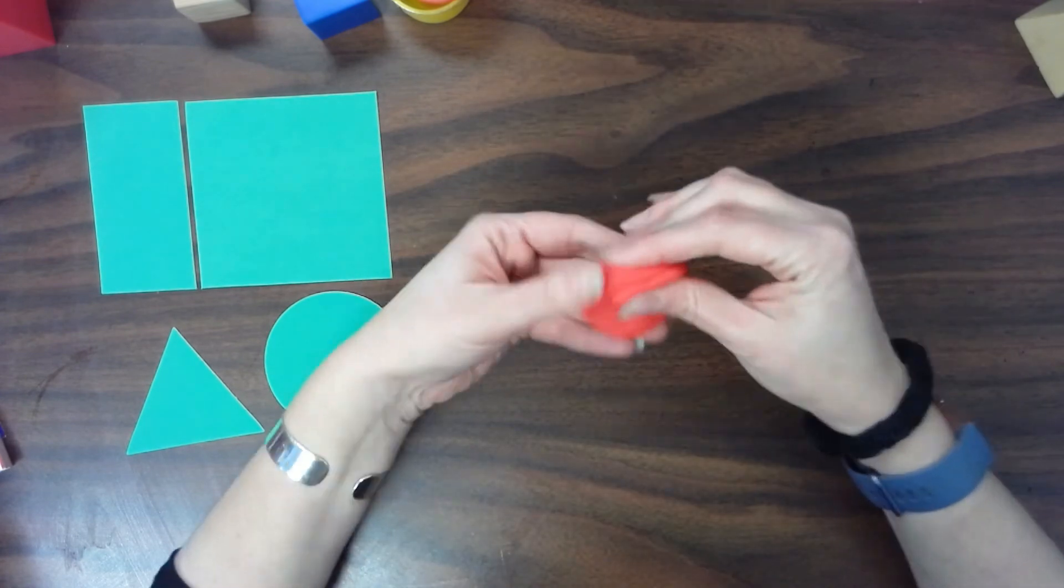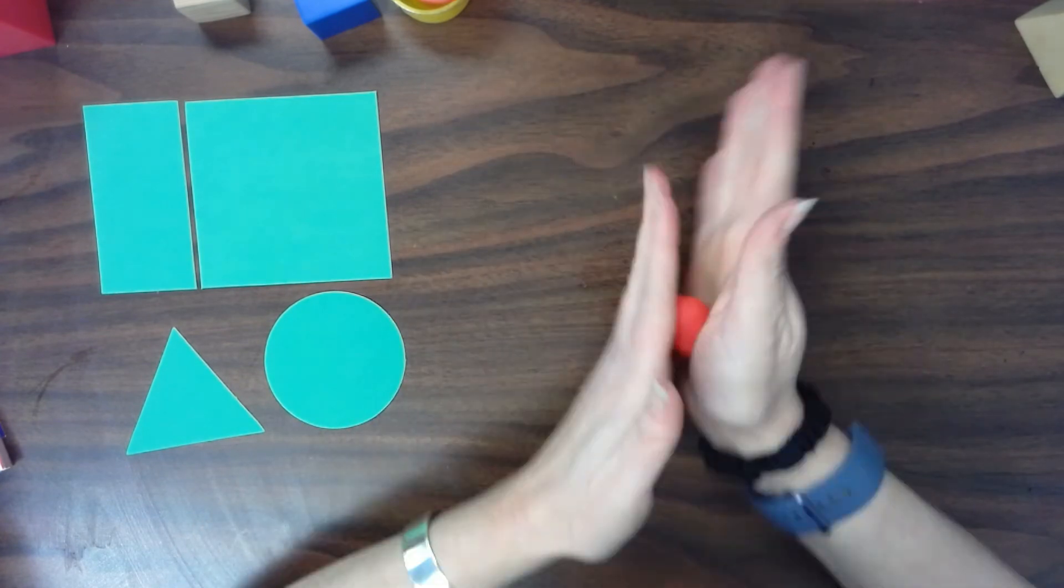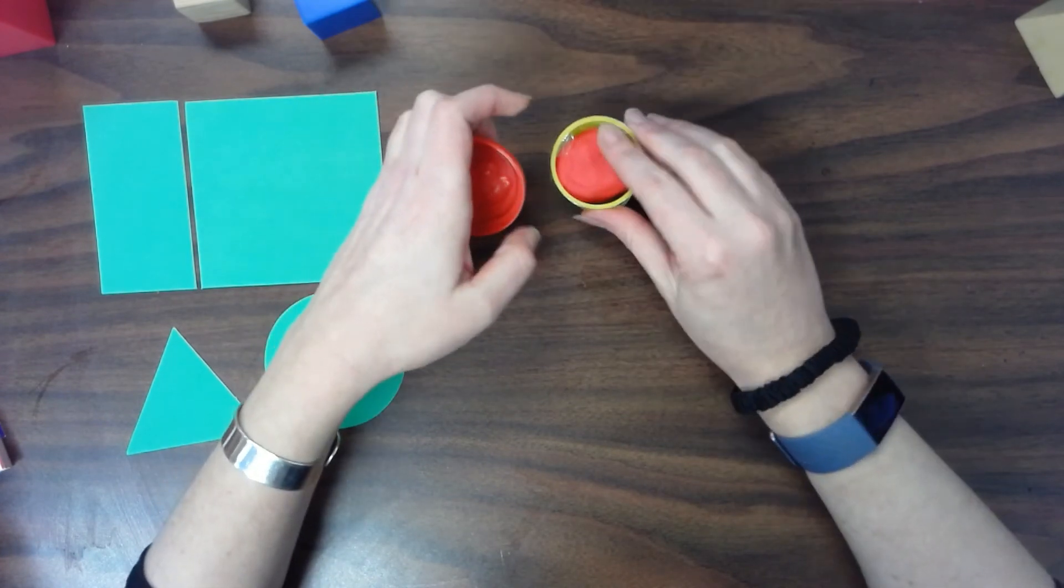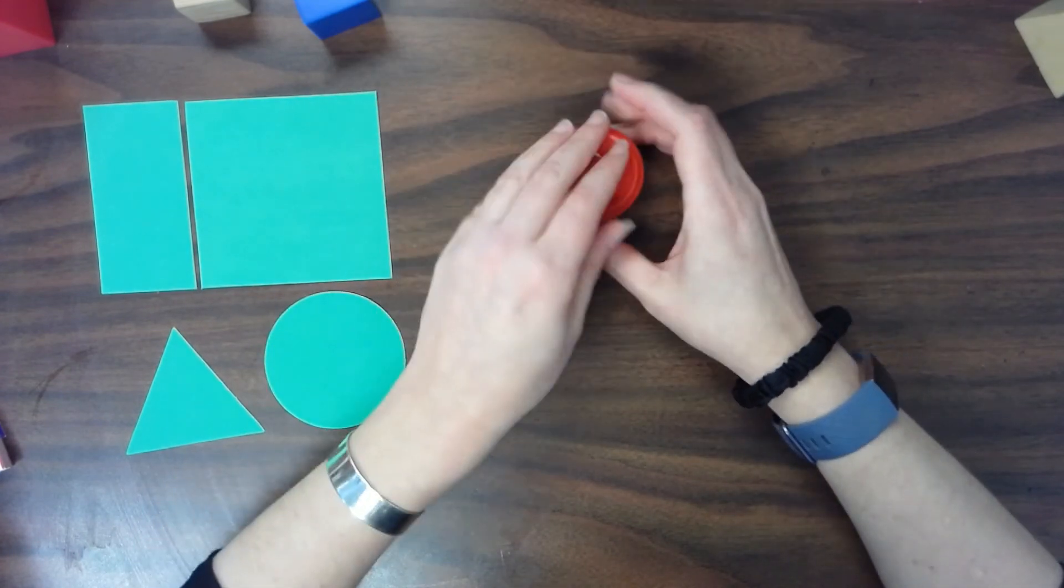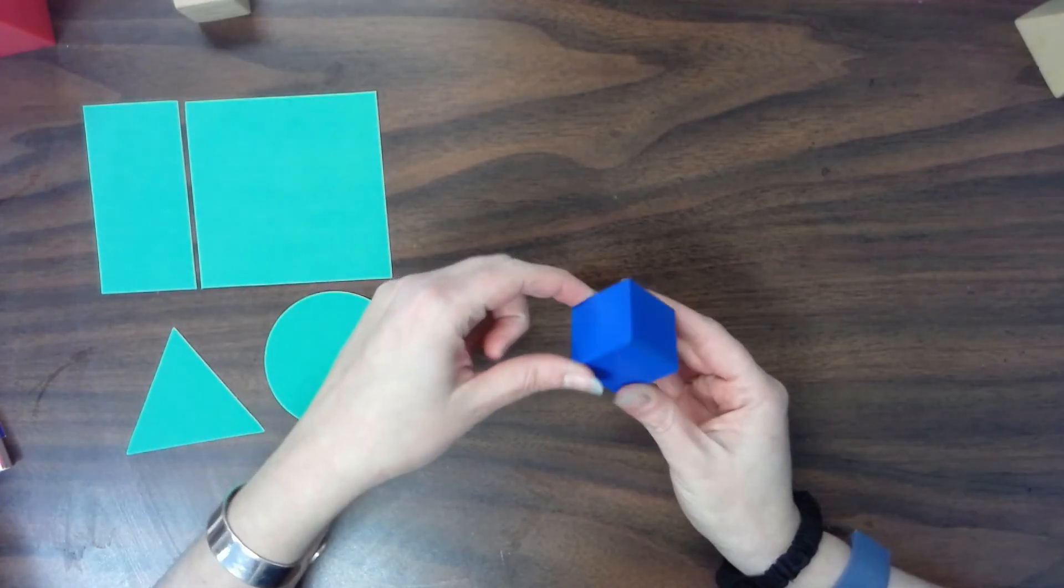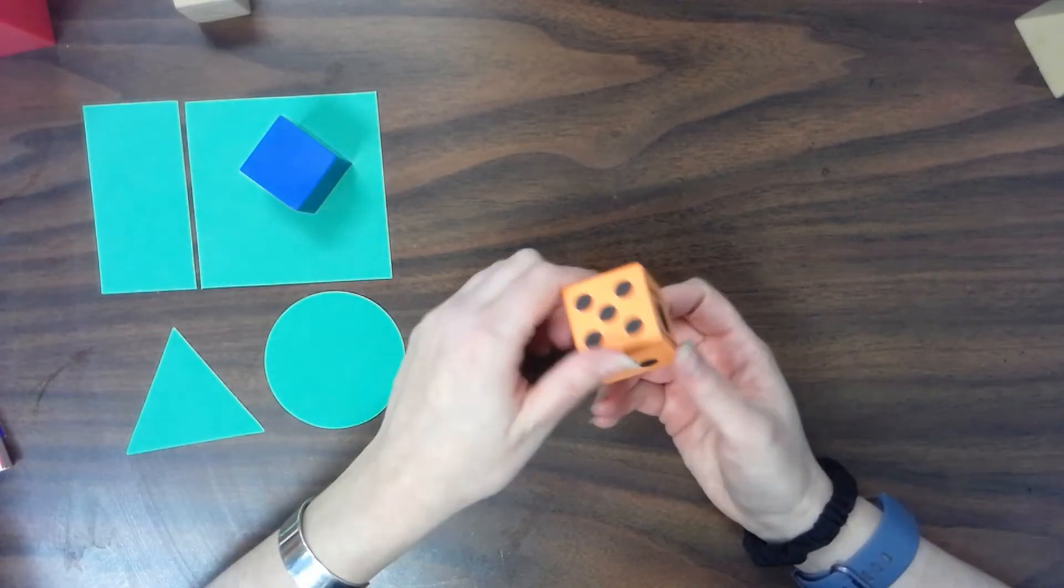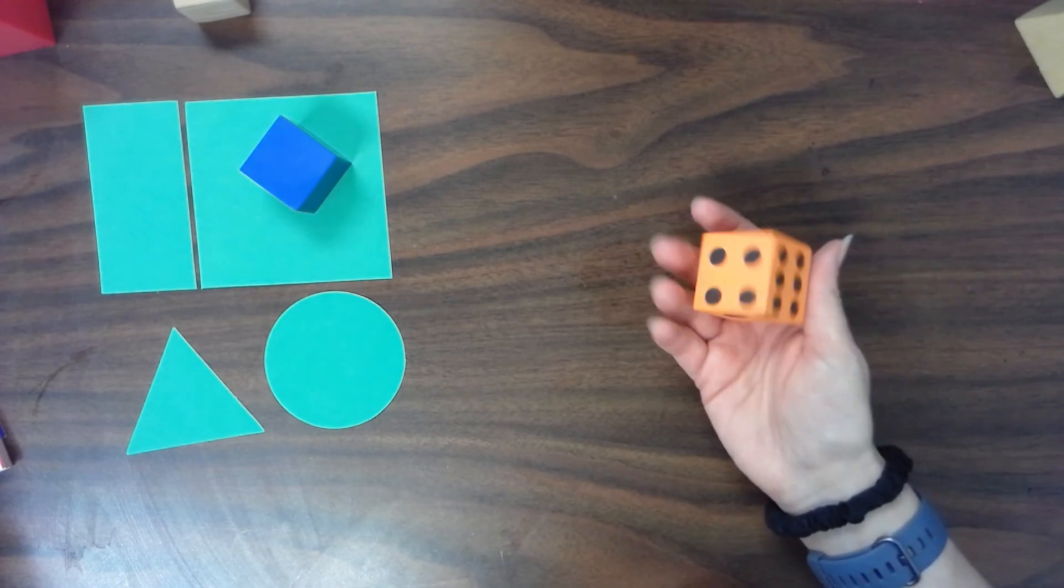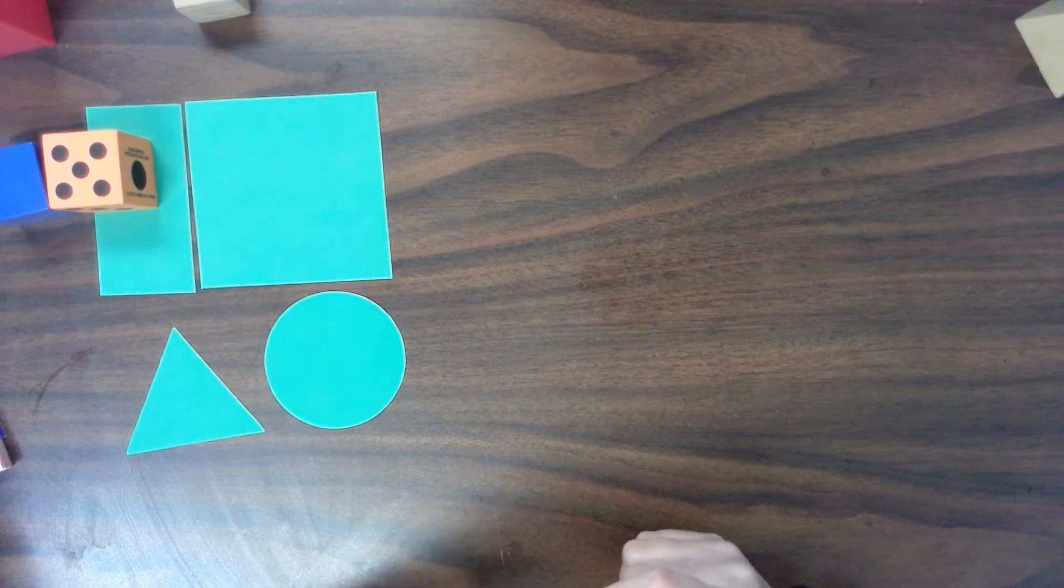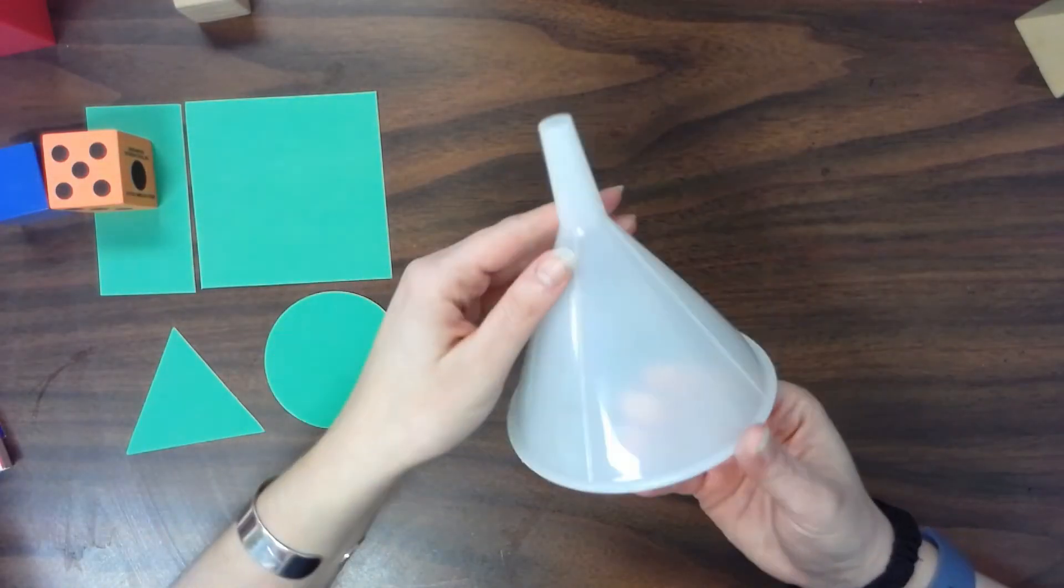So today I want to see if you have play-doh. I want to see if you can make some of your 3D shapes with your play-doh. If you do not have play-doh, I want you to look around your house and see if you can find some of your 3D shapes. Remember, we're talking about a cube. Maybe you have boxes or a dice from a game. A dice is a cube. Let's see if you have a cone. Like party hats or cones. Or if you have a funnel like I have, there's my cone.